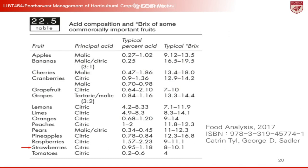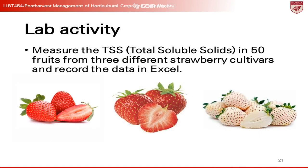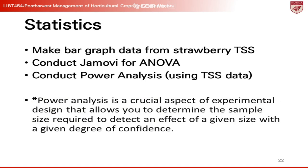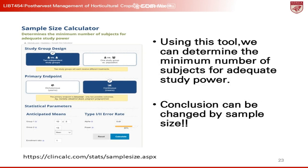For all TA measurements, two students will conduct a demonstration today. In addition, we will measure the total soluble solids (TSS) in 50 fruits from three different strawberry cultivars and record the data in Excel. Using this data, we will create a bar graph and conduct an ANOVA in JAMOVI. We will also conduct a power analysis to determine the sample size required to differentiate the TSS measurements among the strawberry samples.